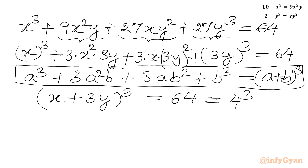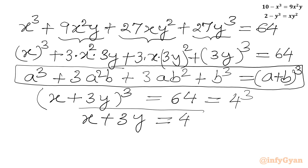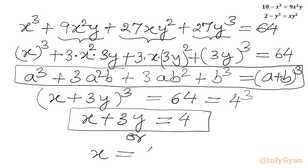So we have (x + 3y)³ equals 64, which equals 4³. For real x and y, taking the cube root gives us x plus 3y equals 4, or x equals 4 minus 3y.